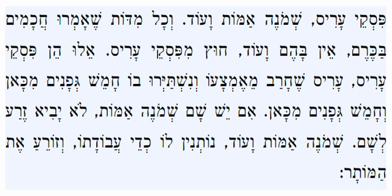This learning is Piskei aris — gaps in an aris. So like we learned earlier, an aris is when there are five vines that are hanging on a wall. And we learned that unlike a usual regular vineyard where you need two rows of vines, by an aris, when the vines are on top of a wall, even one row of five vines is considered a vineyard. So if there is a gap in an aris,